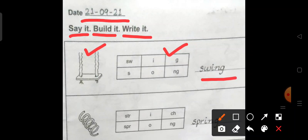This is the picture of a swing. So find the spelling of the word swing here in the grid. S-W-I-N-G swing. Write it here.